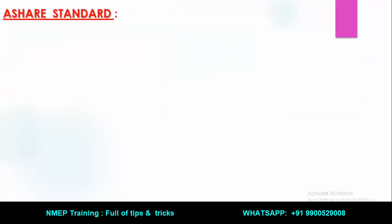Next, very quickly, I will move to the ASHRAE standard. As per ASHRAE standard, you have to maintain the temperature at 25 degrees Celsius or 76 degrees Fahrenheit. And relative humidity should be maintained in the range of 30% to 60%, with 50% being the general midpoint of that range.